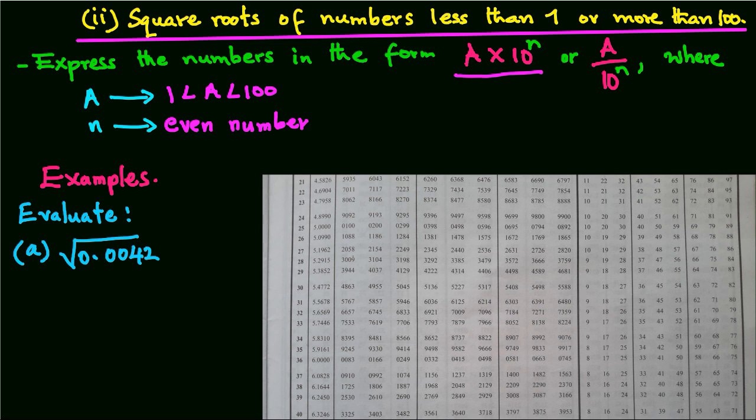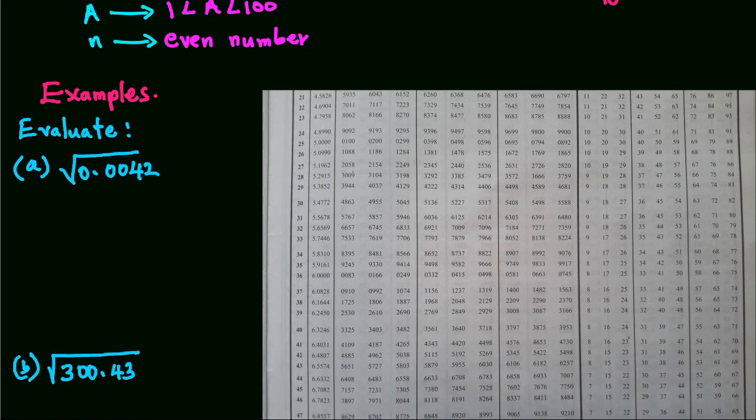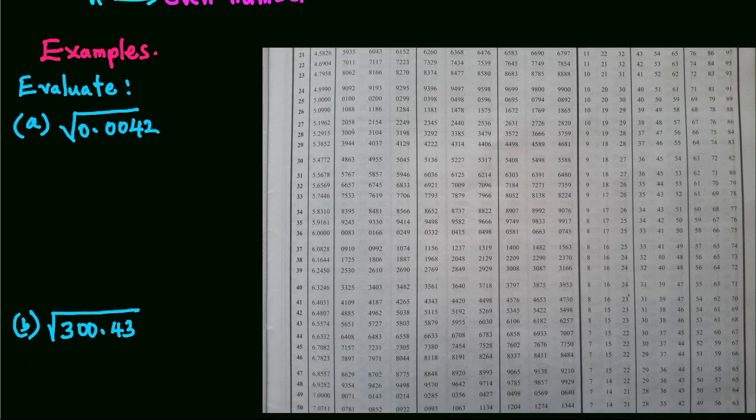We have an extract of a table of square roots. In our first example, example A, we want to evaluate square root of 0.0042 using tables.